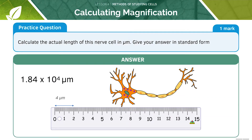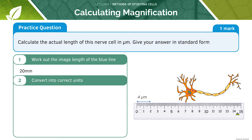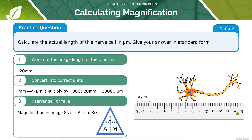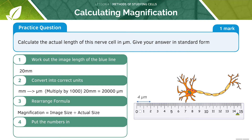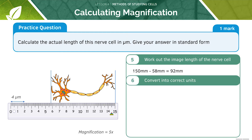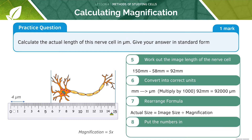Here's another exam question — the answer is shown here. First, we need to work out the image length of the blue line, which works out to be 20 millimetres. Next, we need to convert into the correct units. Now we need to rearrange the formula. Our next step is to put the numbers in to work out the magnification. However, our question doesn't end there — we now need to work out the length of the image of the nerve cell. We must convert into the correct units and rearrange the formula, then put the numbers in, which will give us the actual length of the nerve cell.